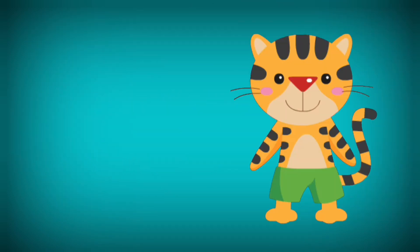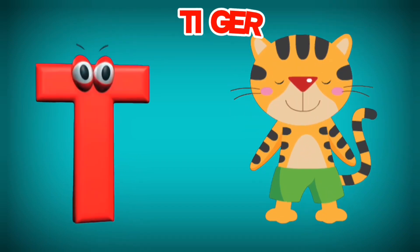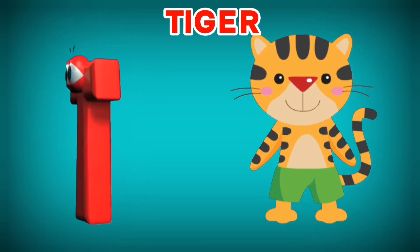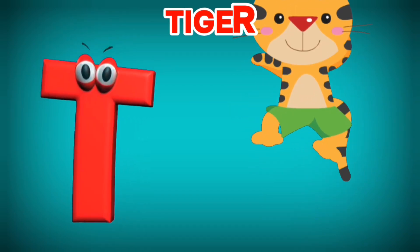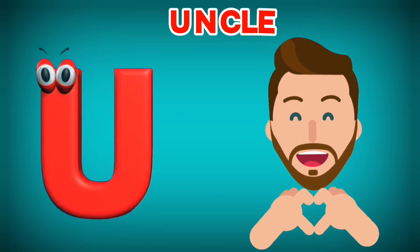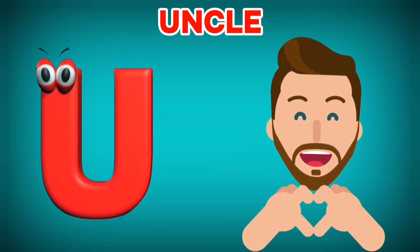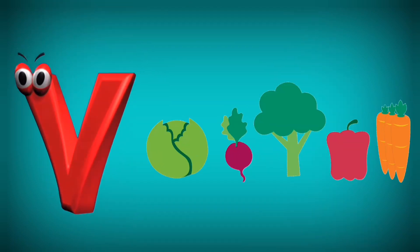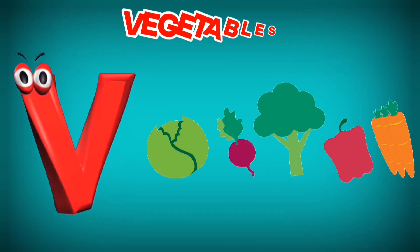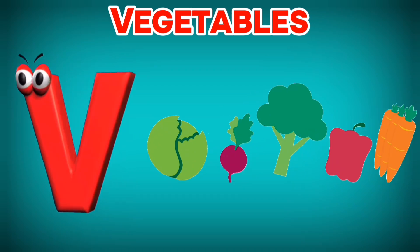T is for Tiger. T, T. Tiger. U is for Uncle. U, U. Uncle. V is for Vegetables. V, V.